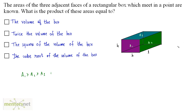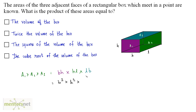Now, what is the value of A1? It is B times H. A2 is L times H. A3 is basically L times B. So this equals B times H times L times H times L times B. That gives us B² times H² times L², which is (LBH)². And LBH is the volume. So this product of these areas equals the square of the volume of the box.